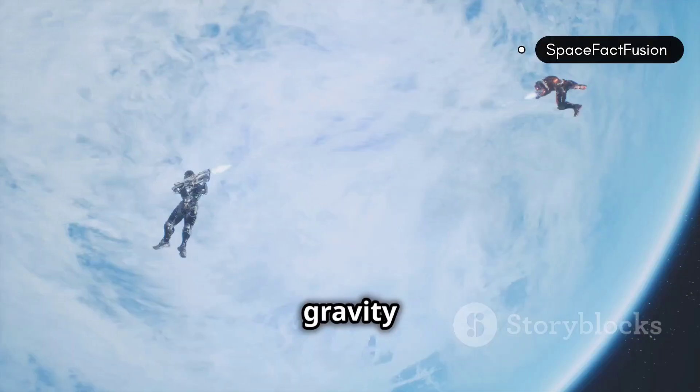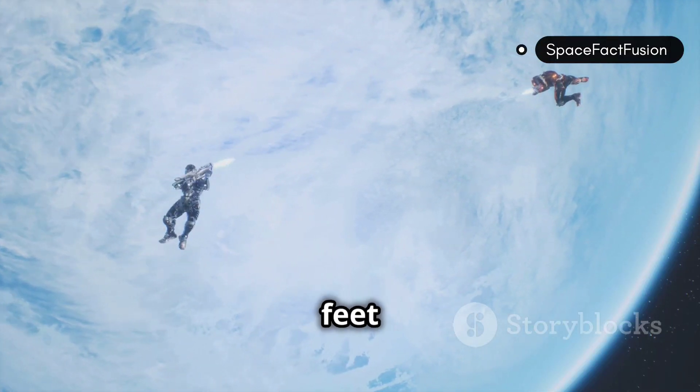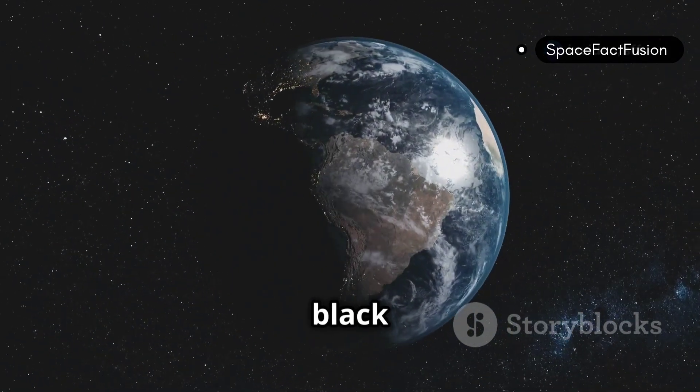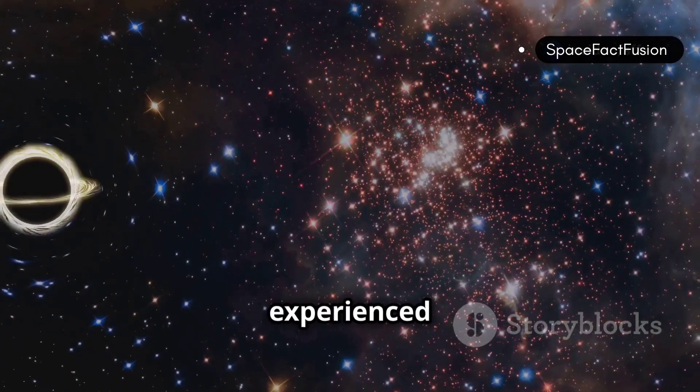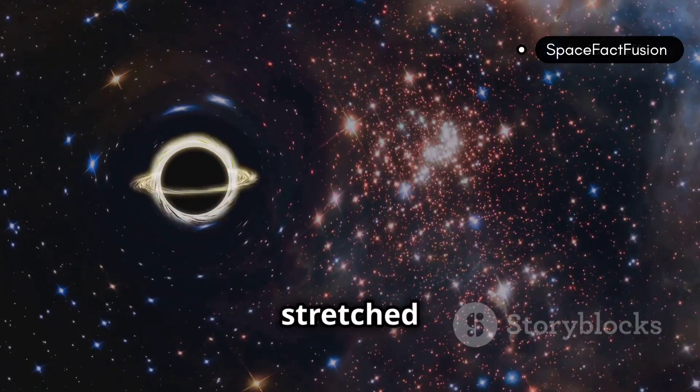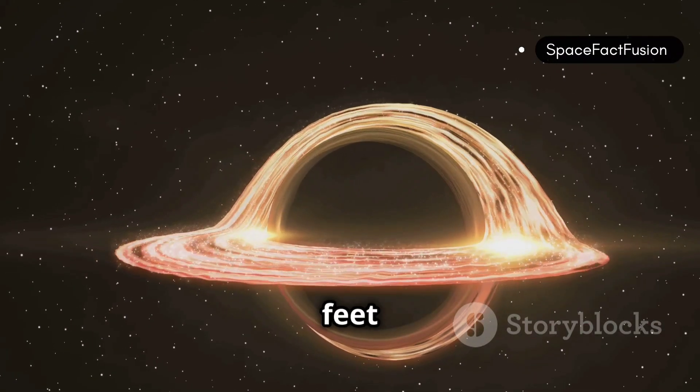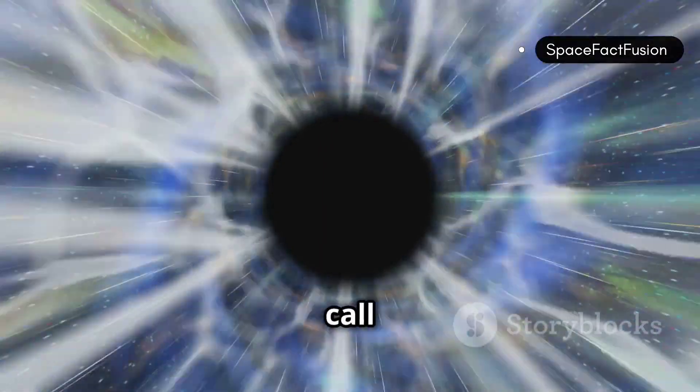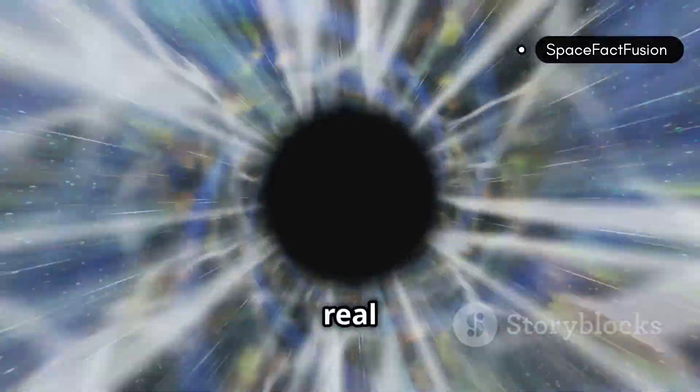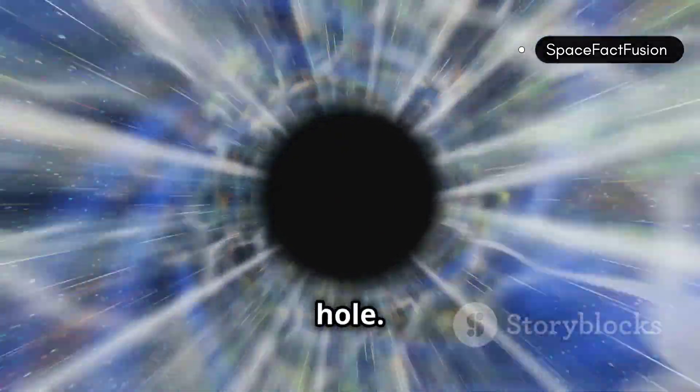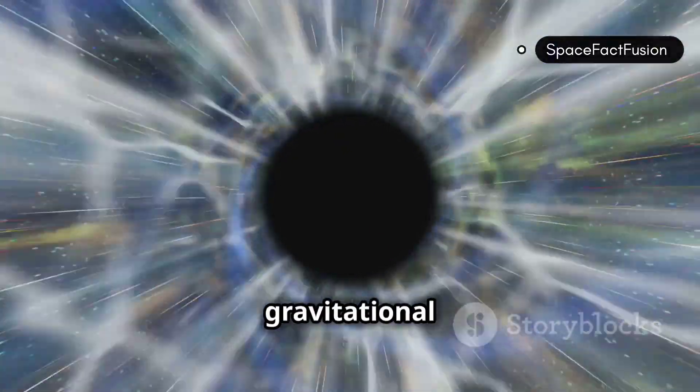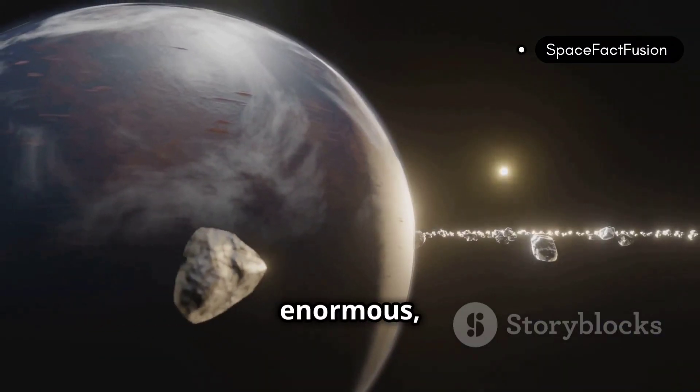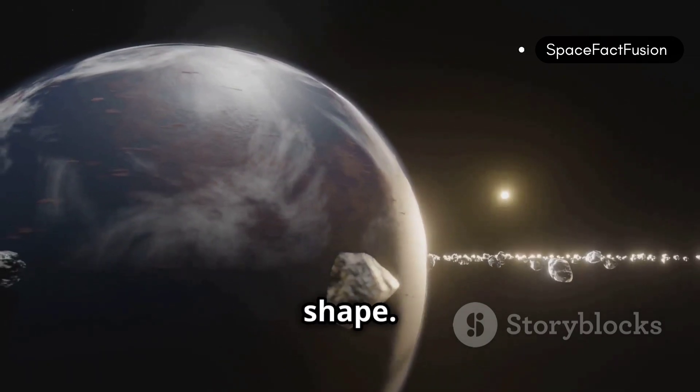We experience gravity every day. It's the force that keeps our feet on the ground and the Earth in orbit around the sun. But the gravity of a black hole is something that we've never experienced before. Imagine being stretched like a piece of spaghetti, your feet feeling a stronger gravitational pull than your head. Physicists call this spaghettification, and it's a real consequence of getting too close to a black hole. The difference in gravitational force on the side of Earth facing the black hole and the side facing away would be enormous, stretching our planet into an elongated shape.